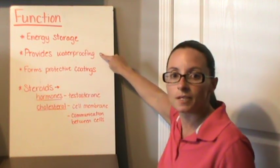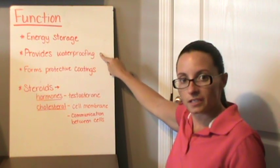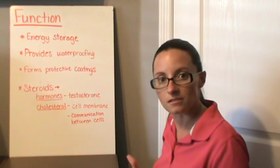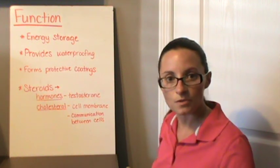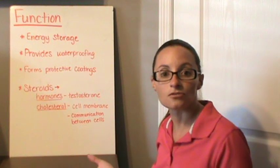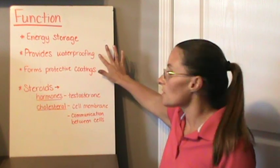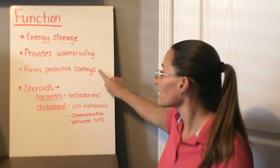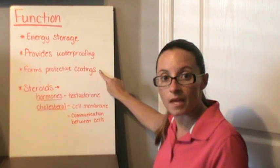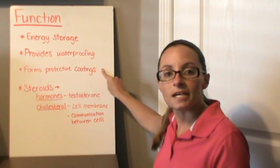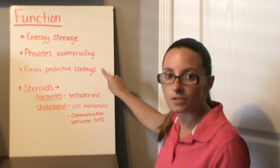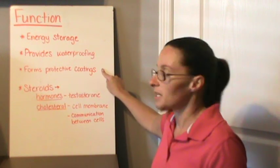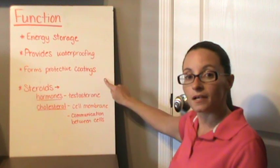Lipids also help to provide waterproofing. Think about why people wax their cars. Because the wax, the water rolls right off the car and you don't end up with the little droplets of water on there. So they help provide waterproofing. Water is not going to get through. Water is not going to get into it. Protective coating is kind of in the same area of that. Plants have a protective coating on the outside of them called a cuticle, and those are waxy substances. So they're waterproofing and protective coatings.